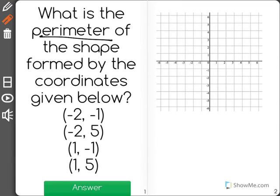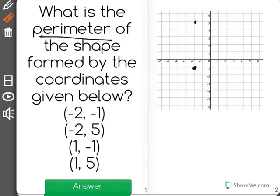My first point is negative 2, negative 1, so I'll plot that where it belongs. Then I have negative 2, 5, followed by 1, negative 1, and 1, 5.